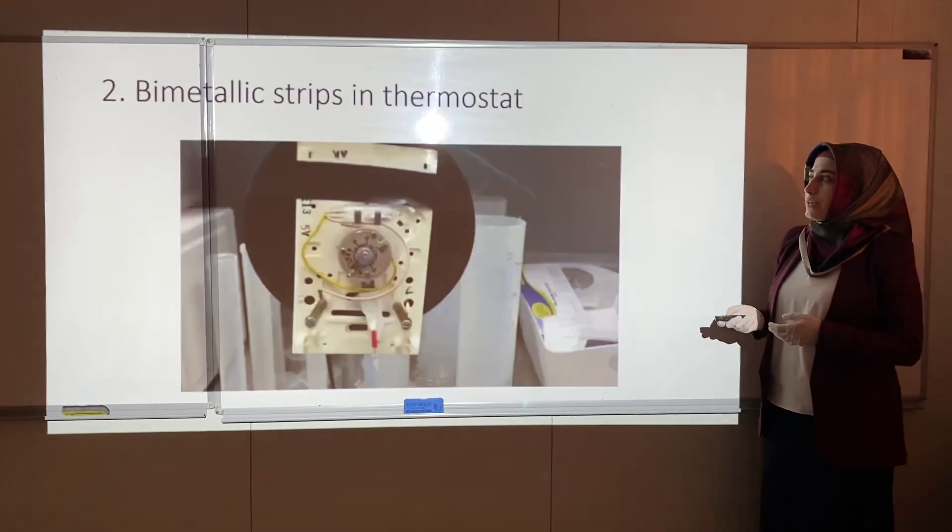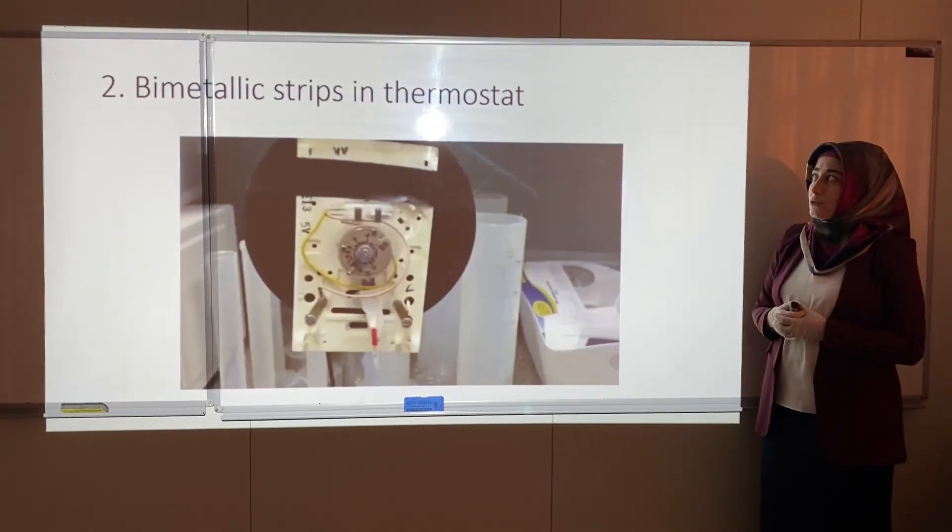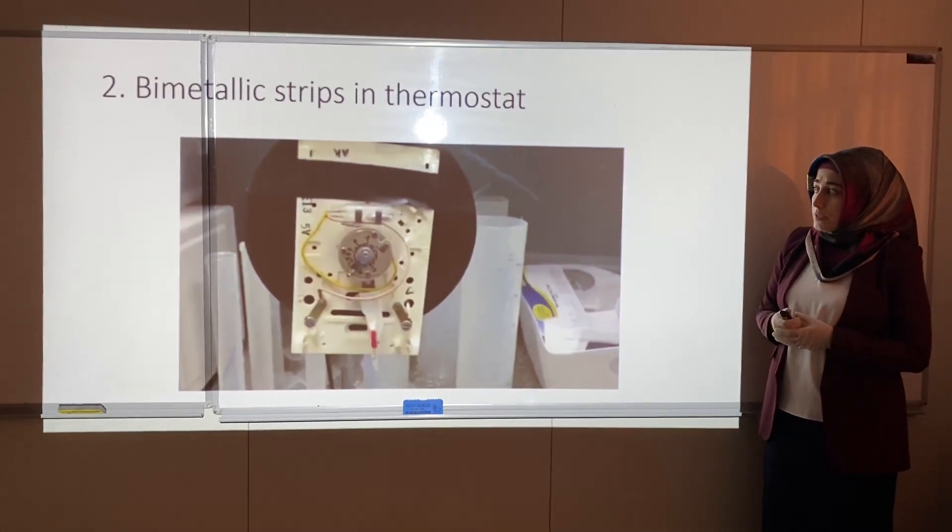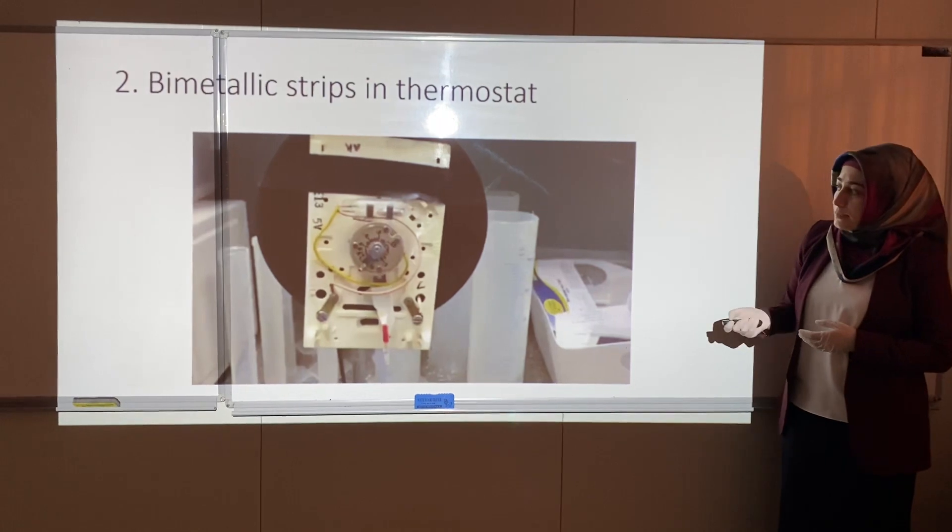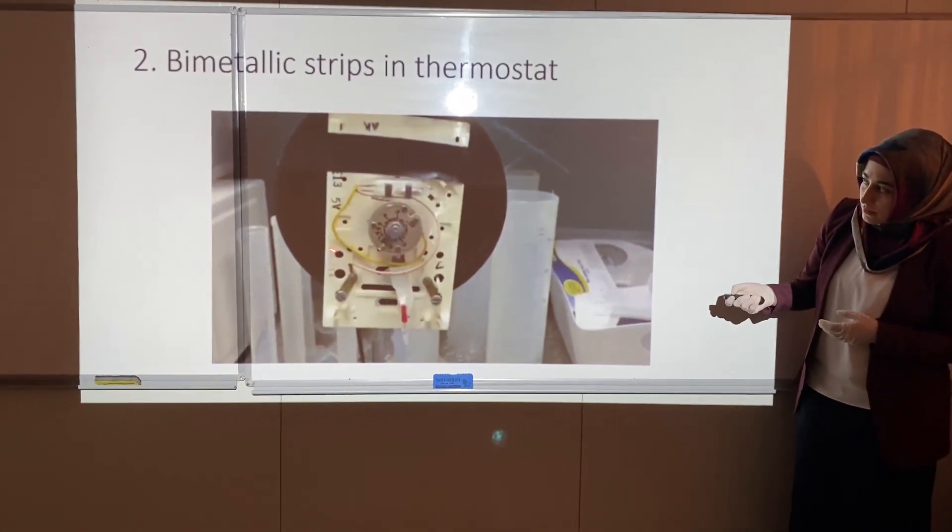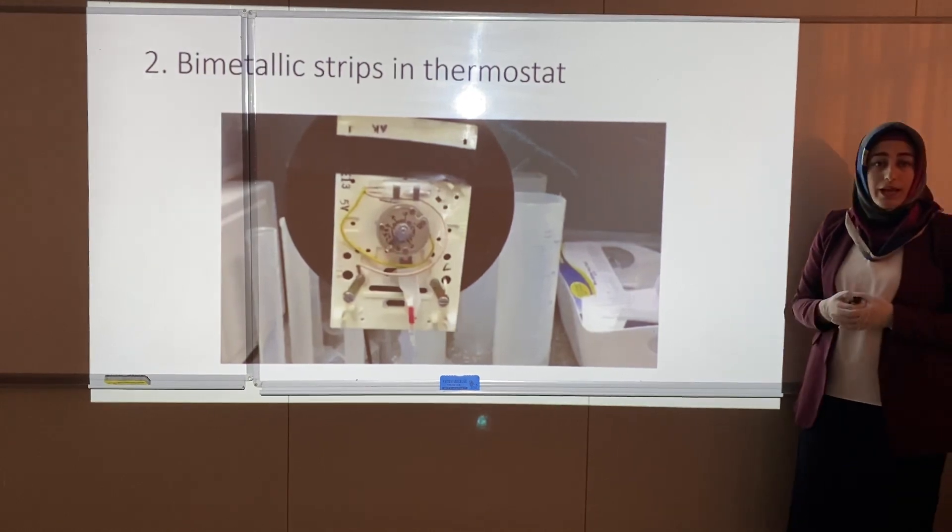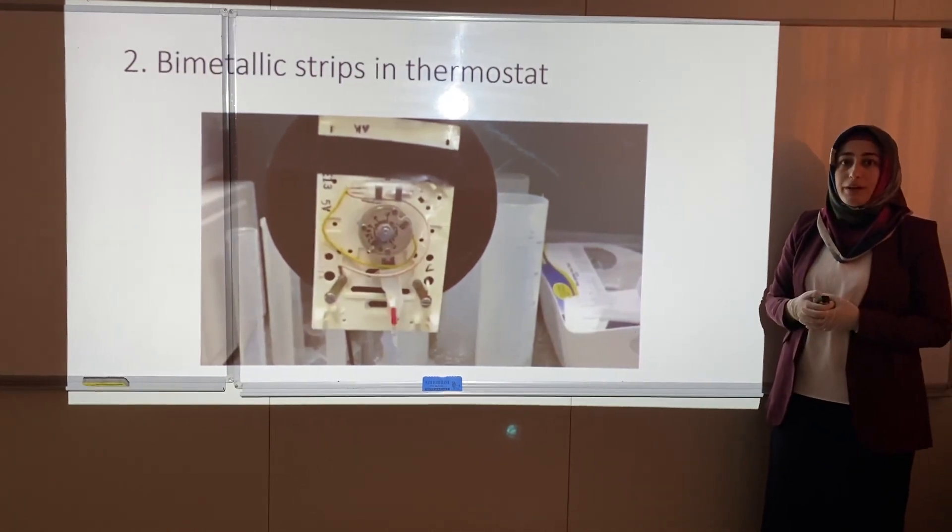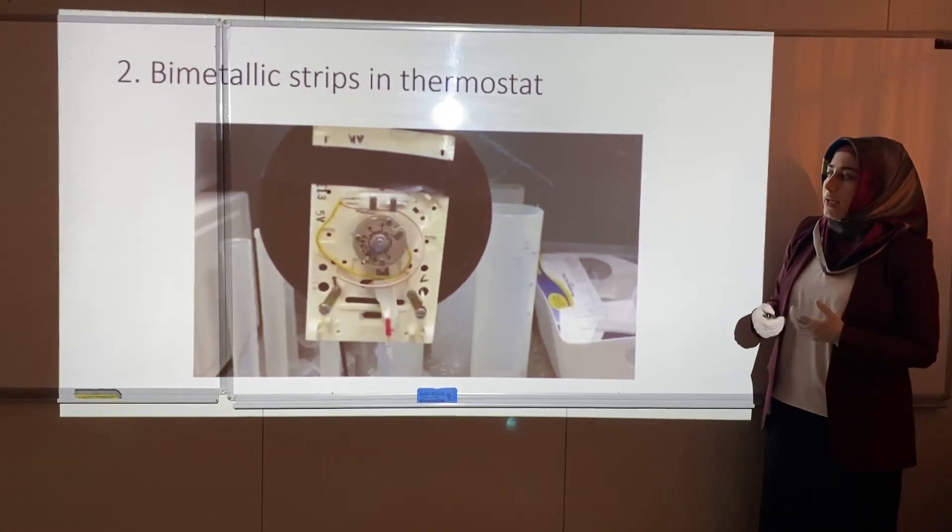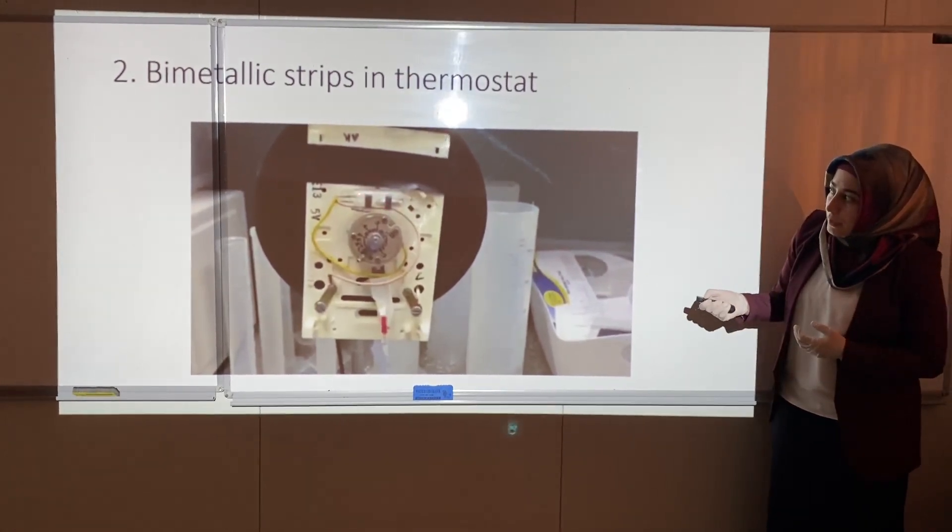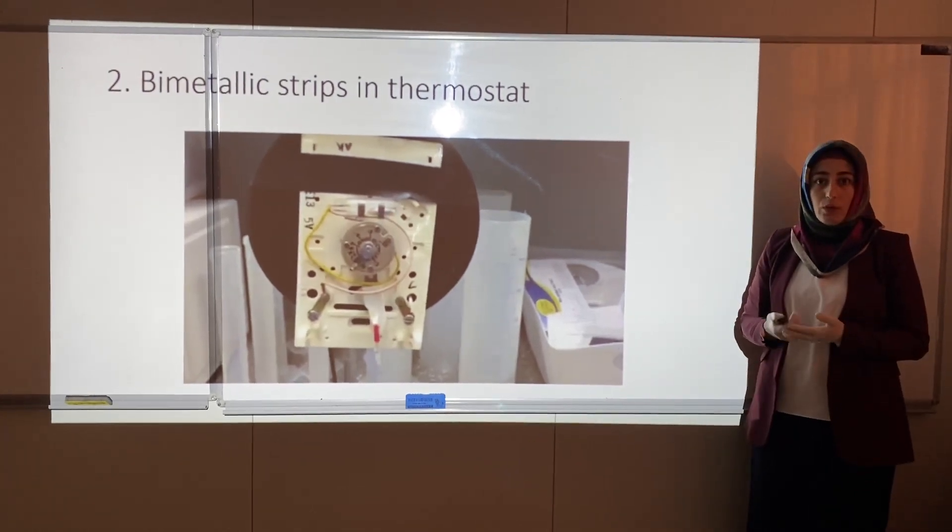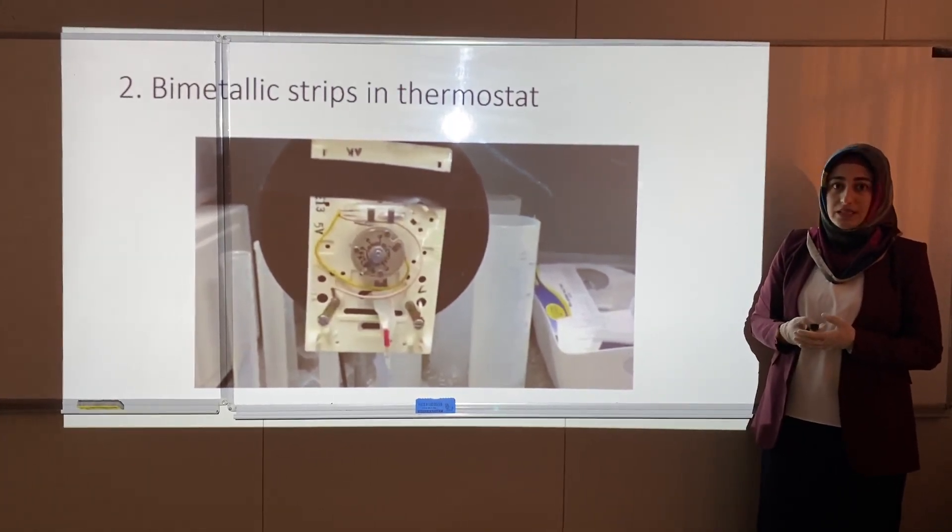The second application is the bimetallic strip in a thermostat inside a heater. The thermostat is made up of two coiled metals, different metals. Different metals mean different expansion - they have different responses to temperature. This tube contains mercury, and we know that mercury is a liquid and can conduct electricity.